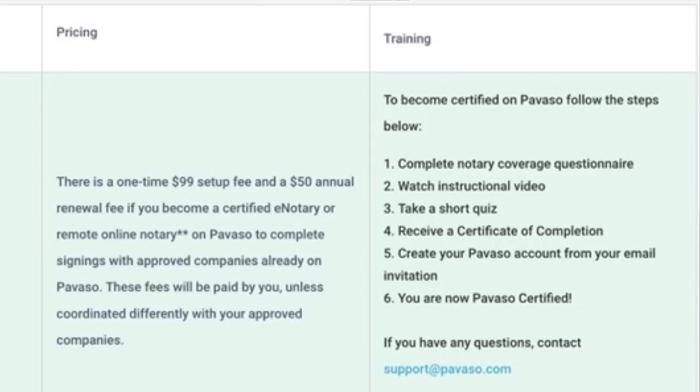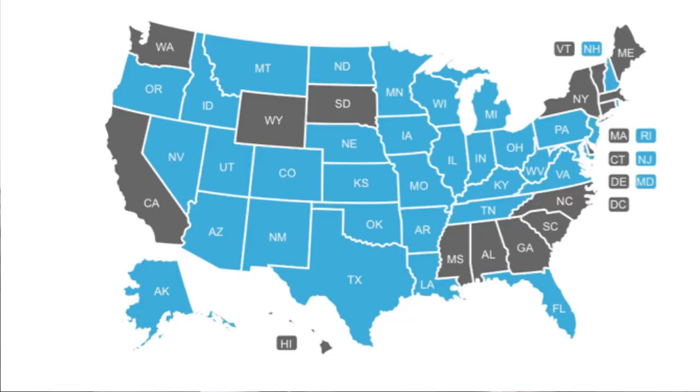Povasso is a company that's been around for a long time — one of the first I signed up with. There is a $99 setup fee to join and you need to be Povasso-certified, which just requires watching a training video, taking a quiz, and passing it in about 30 minutes. After the first year there's a $50 annual fee to continue using the platform. No monthly fee or transaction fee — just the setup fee and then an annual fee. Availability covers the majority of states with permanent RON laws.